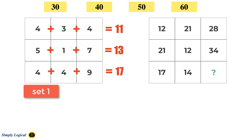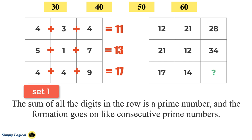So is there any relationship between these numbers? Yes, there is an interesting relation here. That is the sum of all the digits in the row is a prime number, and the formation goes on like consecutive prime numbers.